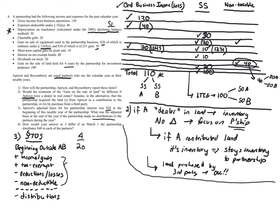We have $110 of ordinary business income loss, plus $90 from the separately stated items, plus $40 from tax-exempt interest income — which also increases basis — giving $240 total. A's 50% share is $120. So we increase basis by $120, giving A an ending basis of $20 plus $120 equals $140.